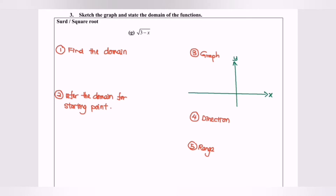Hello everyone. In this video I'm going to sketch the graph and state the domain of the function. We're going to discuss the situation for the square root function, given that the function is square root of 3 minus x.